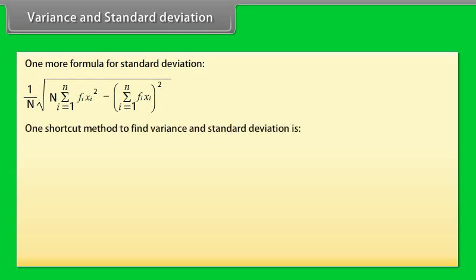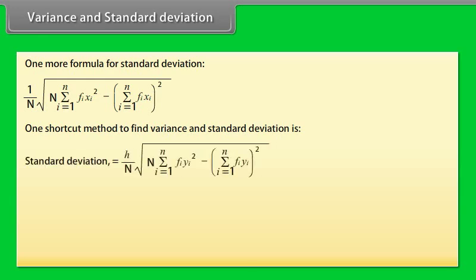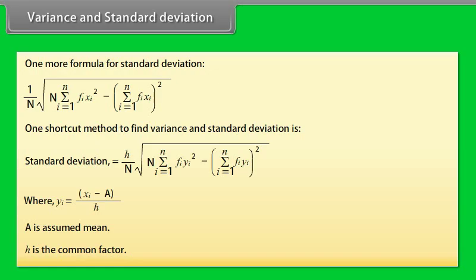One shortcut method to find variance and standard deviation introduces the variable: standard deviation = (Xᵢ − A) / H, where A is the assumed mean and H is the common factor.